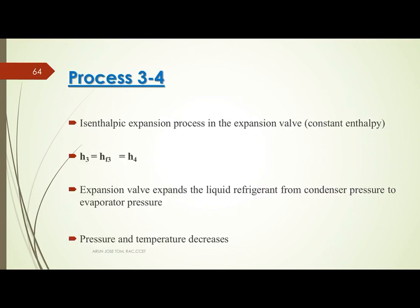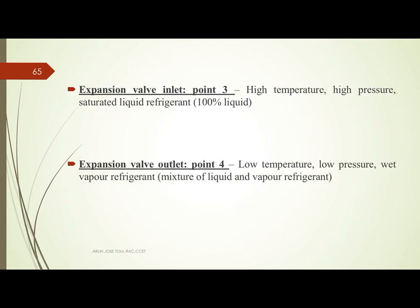The next process is process 3 to 4 — isenthalpic expansion. During this process, the enthalpy of the refrigerant remains constant, so H3 equals H4, and H3 equals HF3 equals H4. The expansion valve expands the liquid refrigerant from condenser pressure to evaporator pressure. Pressure and temperature decrease due to expansion. The exit of the expansion valve is low temperature, low pressure wet vapor — a mixture of liquid and vapor refrigerant.